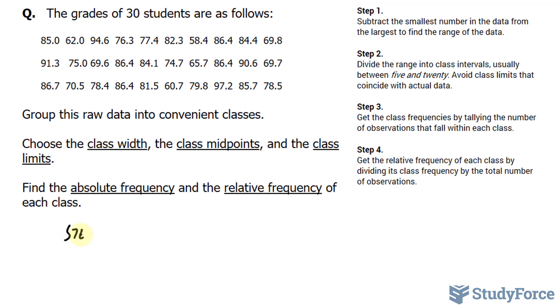We have step 1, and the greatest observation in these 30 is 97.2, and that's located right here. The lowest observation is 58.4, which is right here.